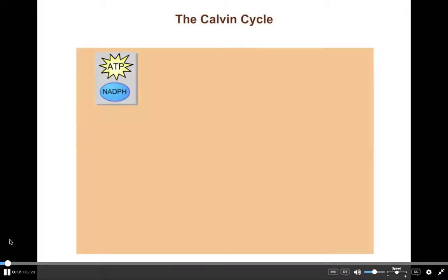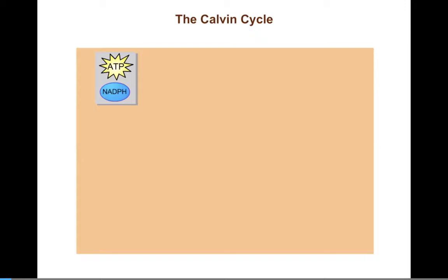The Calvin Cycle. During the light reactions, light energy is stored in the chemical bonds of ATP and NADPH. In the Calvin Cycle, this stored energy is used to produce sugar molecules.